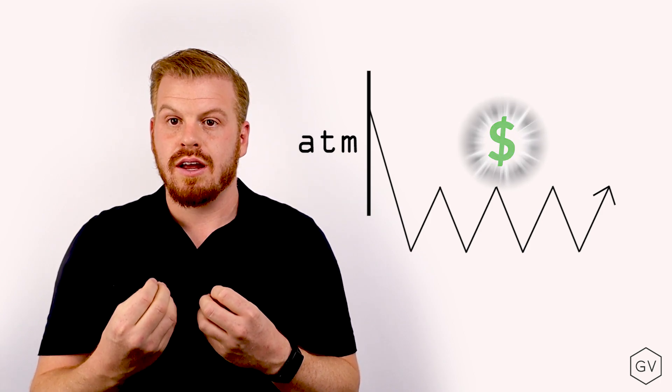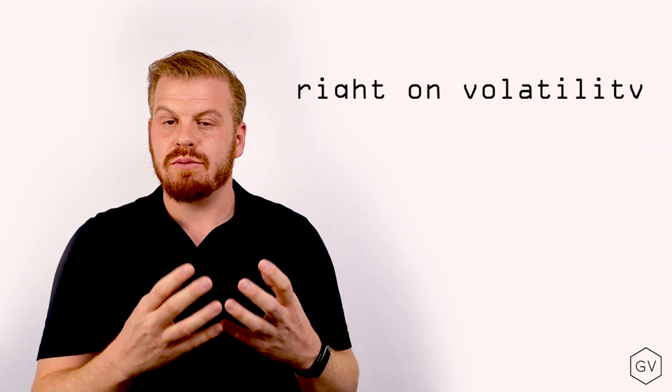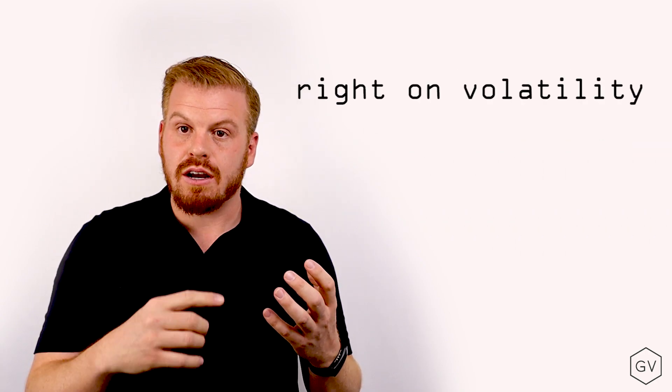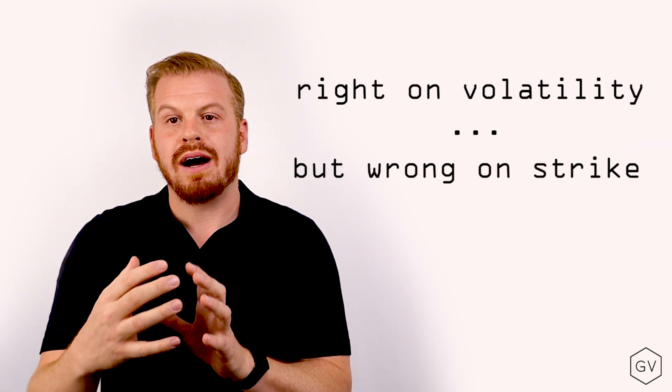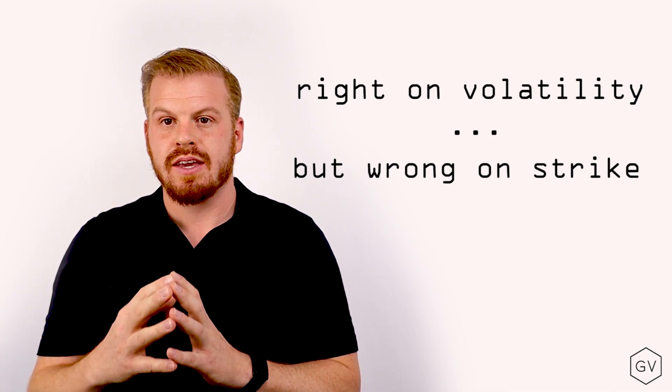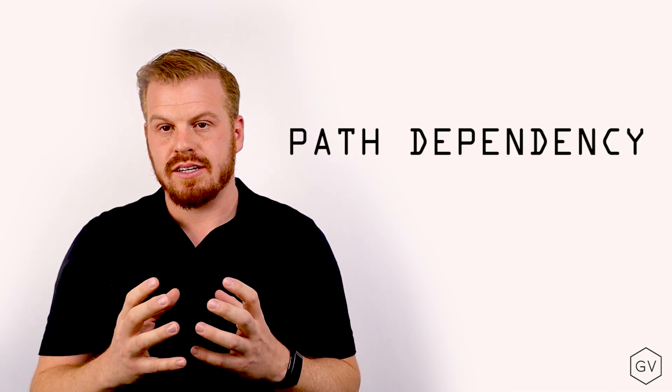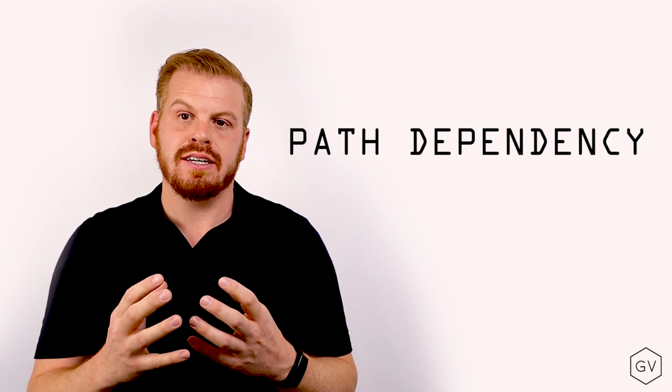And therefore the income generated from the gamma scalping is going to be smaller than anticipated. We could be right about the volatility, we could be right about the bouncing around effect, but wrong about the strike, which provides the greatest gamma. This is the idea of path dependency. There is path dependency to doing realized versus implied volatility spread differentials.